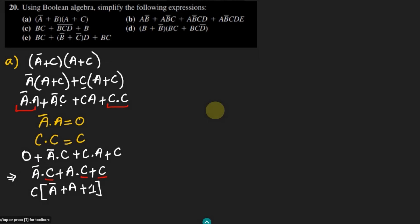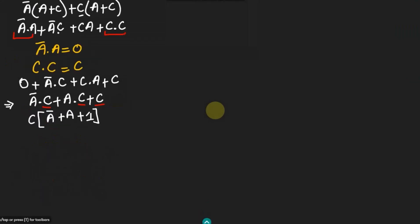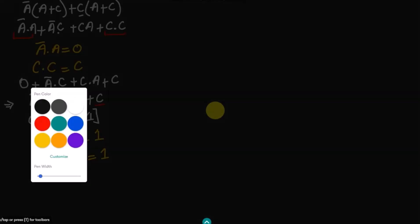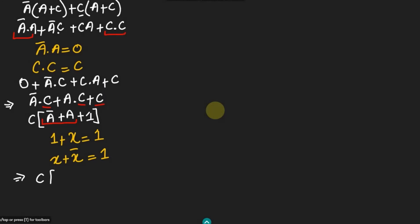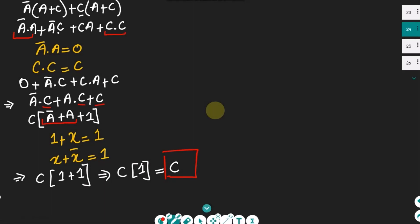According to Boolean algebra, if 1 is added with any term — that is, 1 plus x equals 1 — we always get 1. Also, x plus x' is always equal to 1. So a' + a equals 1, and 1 + 1 equals 1. Therefore we get C multiplied by 1, which gives us C. So C is the simplified answer for part A.